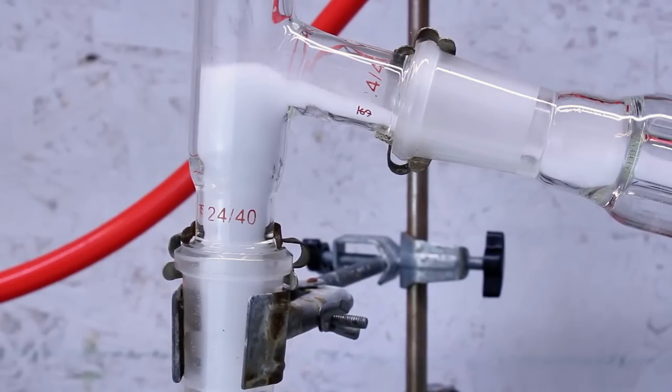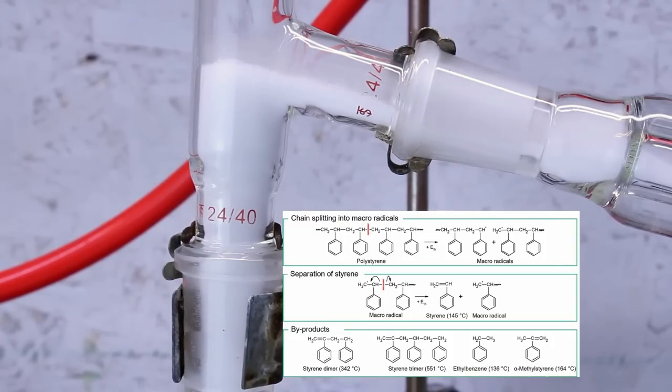What's happening here is that when polystyrene is heated to a sufficient temperature, it begins to break down into its monomer, styrene, as well as a few other side products.